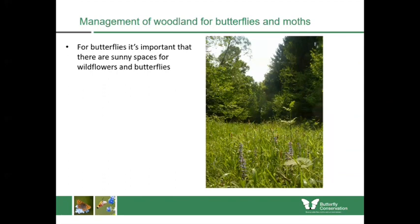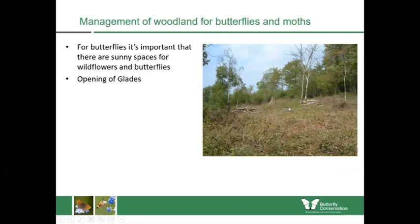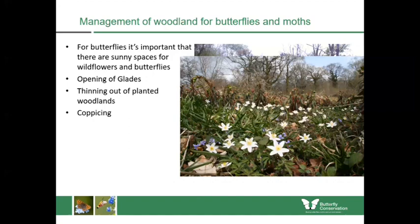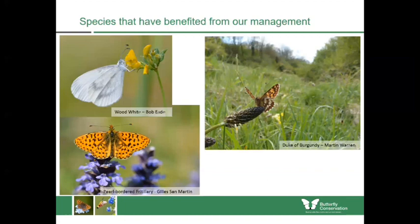When Butterfly Conservation manages these places, we want to encourage sunlight — bringing sunlight in will encourage more wildflowers and butterflies while still maintaining the woodland around them. That might be through opening new glades where trees are cut but the wood is stacked and left, allowing wildflowers to flourish again. In heavily planted woodlands it's important to thin them out to open up rides and glades, which can involve coppicing. Our most significant priority species which have benefited from woodland management include the wood white, duke of Burgundy and pearl-bordered fritillary.